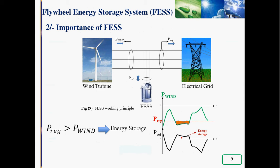If the power P_reg is less than P_wind, the asynchronous machine operates in the generator mode where we have an energy delivery.